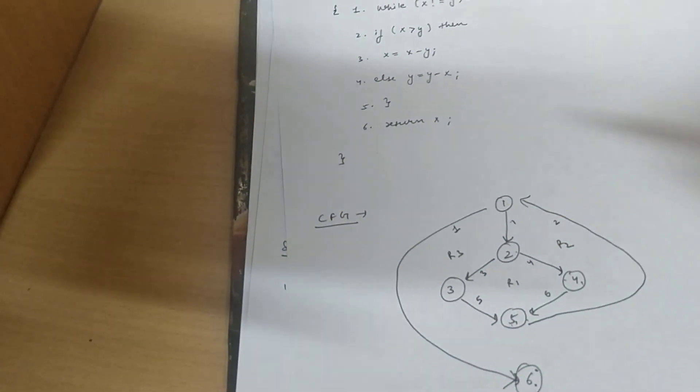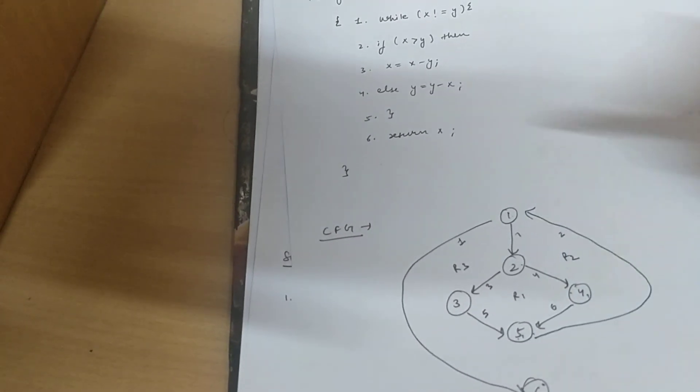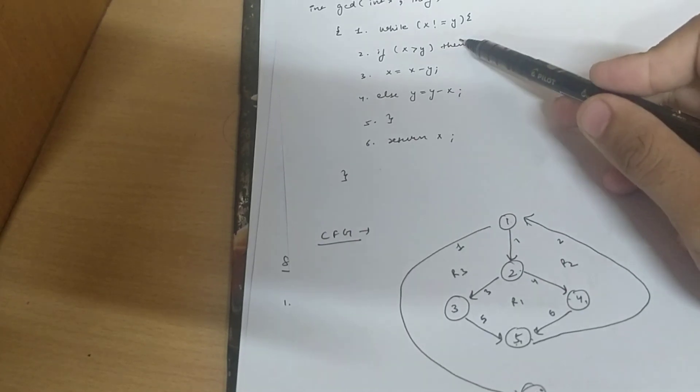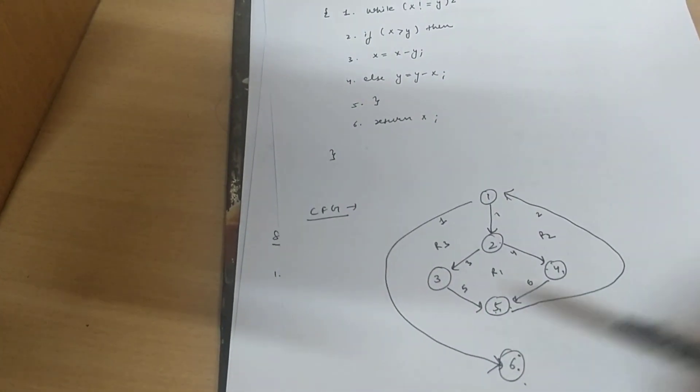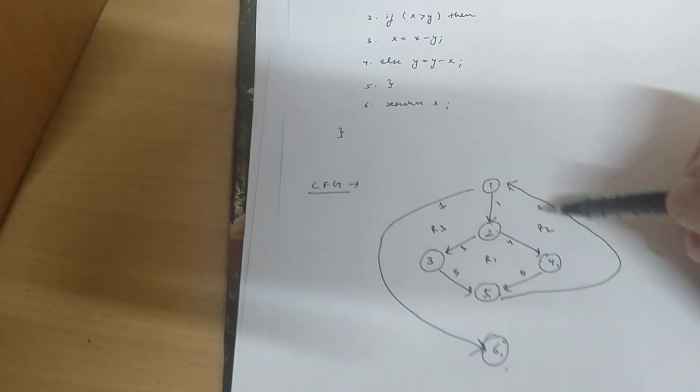And then it will return it. It will then return to 1 according to the program and repeat the while loop. If the condition for the while loop is wrong, it will directly come to the sixth step. From this control flow graph, we can easily calculate the Cyclomatic complexity.